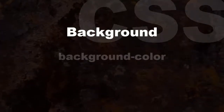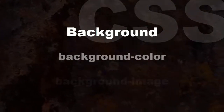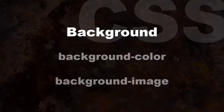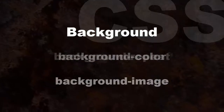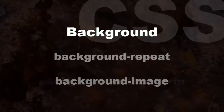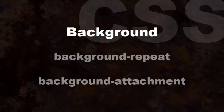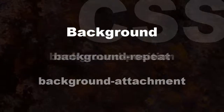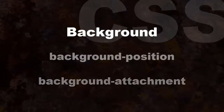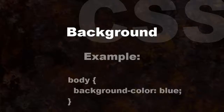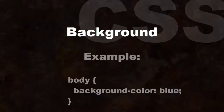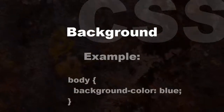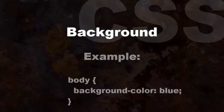The following properties control the background of HTML elements: background-color, background-image, background-repeat, background-attachment, and background-position. For example: body { background-color: blue; }.